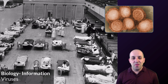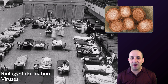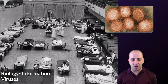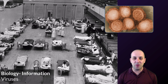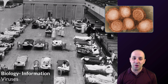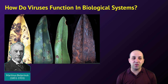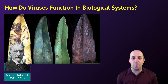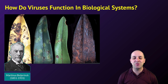This is an image from the 1918 influenza pandemic, which was caused by the virus you see in this electron micrograph. The flu virus kills a pretty significant number of people each year, and in 1918 that strain was particularly virulent and killed a lot more people than normal. The question we're going to answer here is: how do viruses function in biological systems?